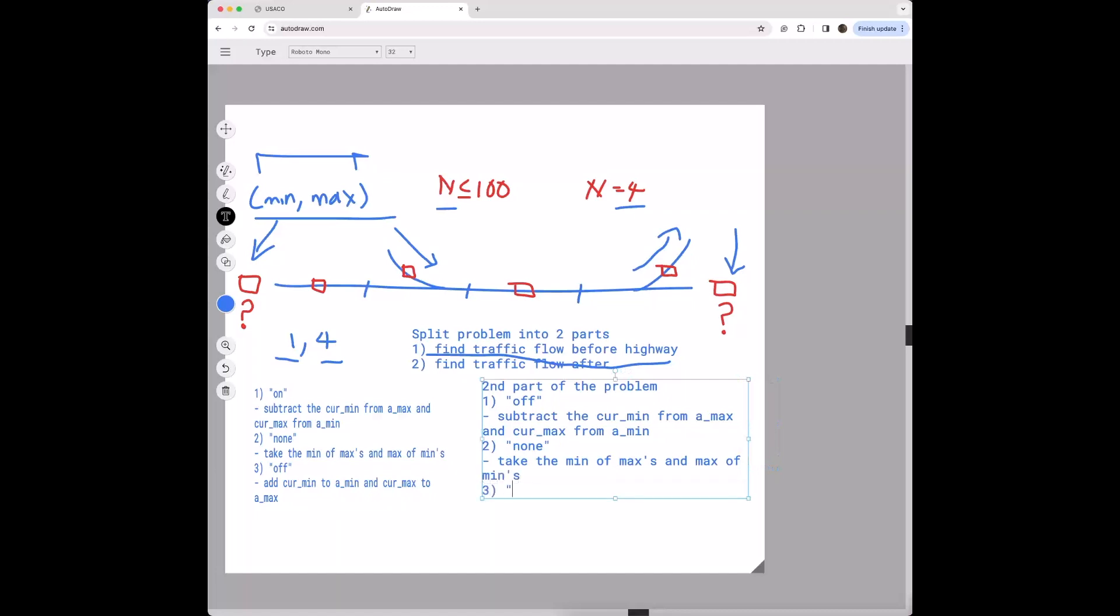And three when it's on. It's the same as when it was off for the previous part. We're going to add ker min to a min and ker max to a max.